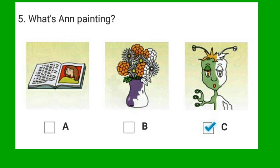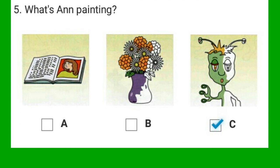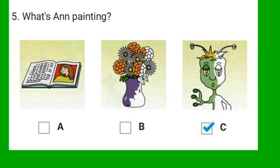5. What's Anne painting? Is Anne reading a book? No, she's painting. Is she painting a picture of flowers? No. Oh, no. She's painting a picture of a monster.